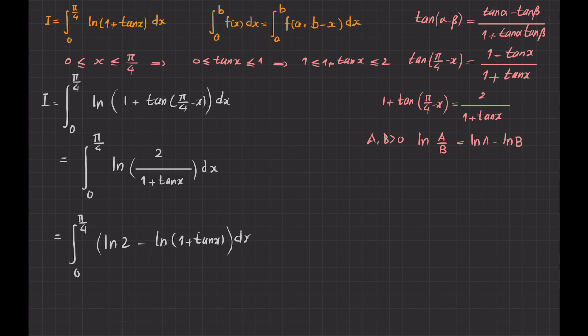So it becomes from 0 to π/4 ln 2 - ln(1 + tan x). And then I decompose this integral to two integrals from 0 to π/4 ln 2 dx minus integral from 0 to π/4 ln(1 + tan x) dx. But now look, I started from I, this is equal, equal, equal up to here, but this is again I.